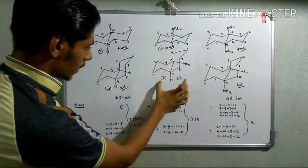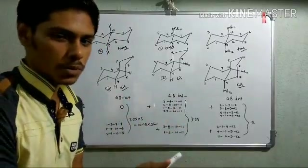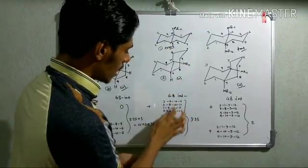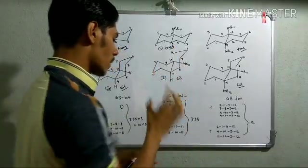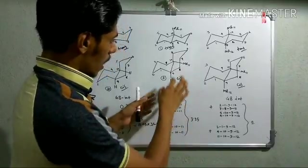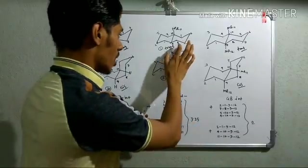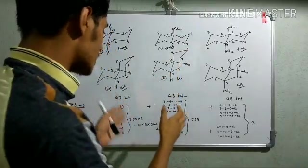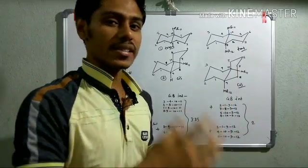Overall, for the cis isomer there will be three plus two, a total of five gauche-butane interactions. But for the trans isomer there will be only four gauche-butane interactions. So the cis isomer has only one extra gauche-butane interaction, and that's why for a 9- or 10-substituted case the trans isomer is only 3.35 kJ/mol more stable than the cis isomer.